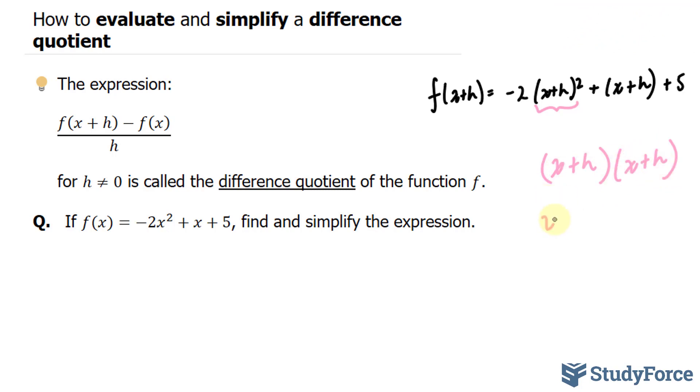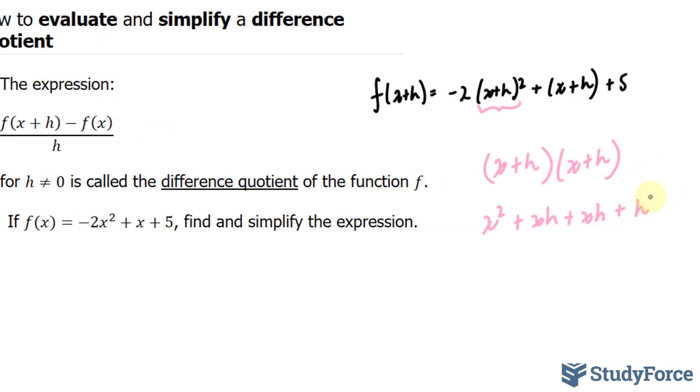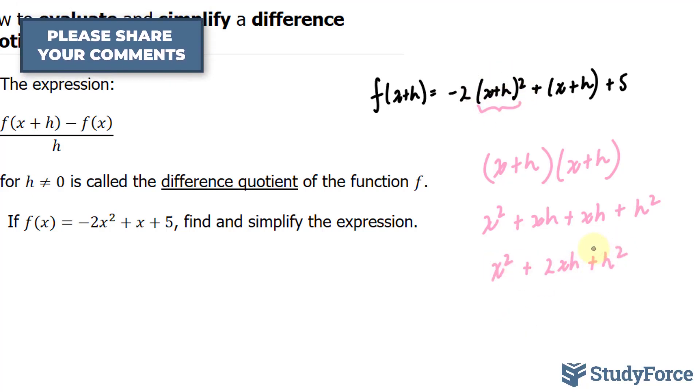x times x is x squared plus xh plus xh. These are two factors being multiplied, and h times h is equal to h squared. x squared plus 2xh plus h squared. So all of this has become the following expression.